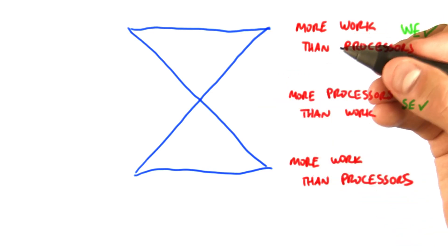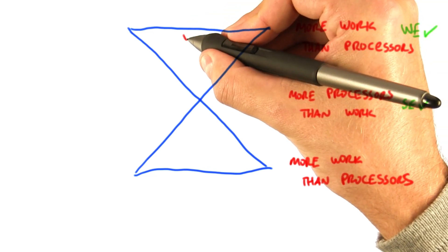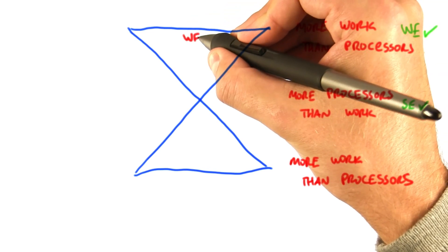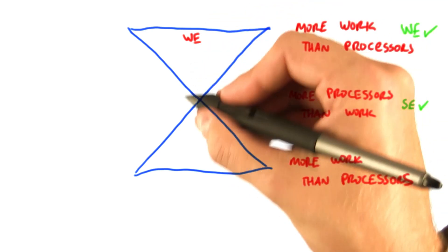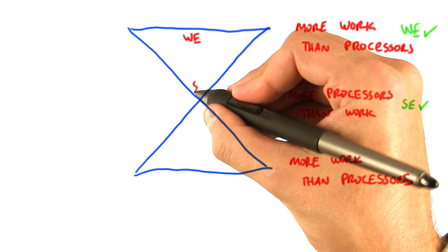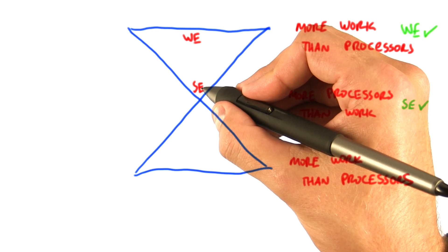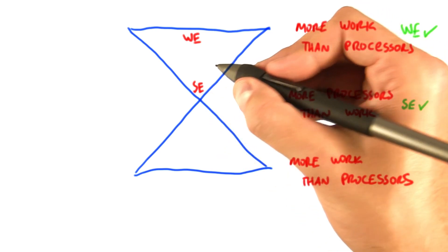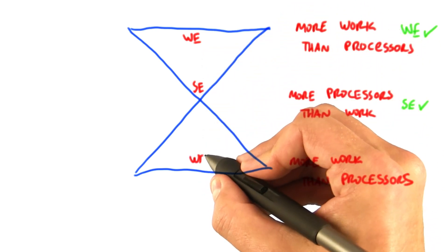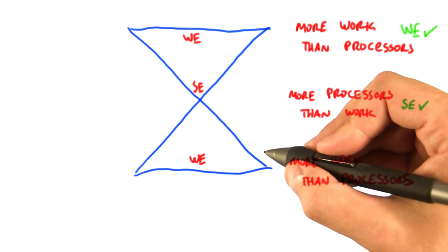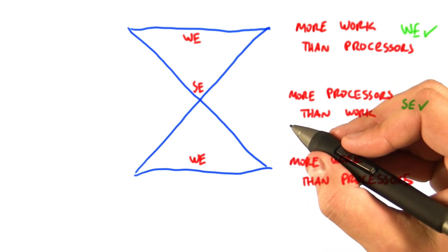In this case, an advanced but good strategy is to start off with a work efficient algorithm when there's lots of work. Once you get down to not very much work, you switch to a step efficient algorithm when you have more processors than work. And then as you start to widen back out, you switch back to a work efficient algorithm when you have enough work to fill the machine again.